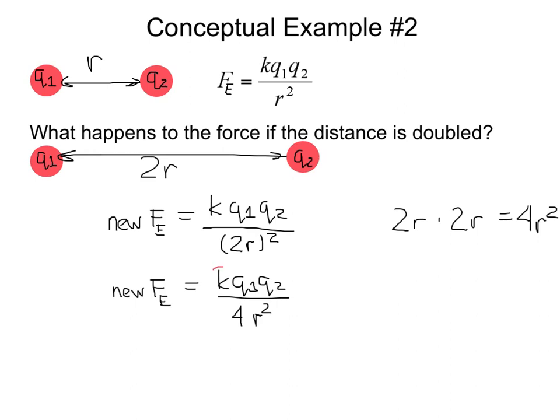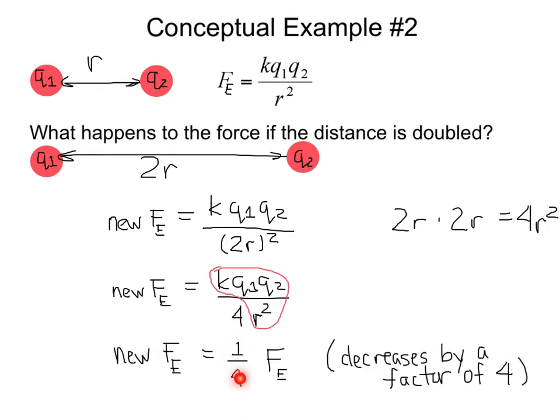But if we look again, here's our original electric force. It's K, Q1, Q2, divided by R squared. So we have an extra 4, or 1 fourth here. So we see we have a quarter amount of the original electric force. That is, it decreases by a factor of 4.